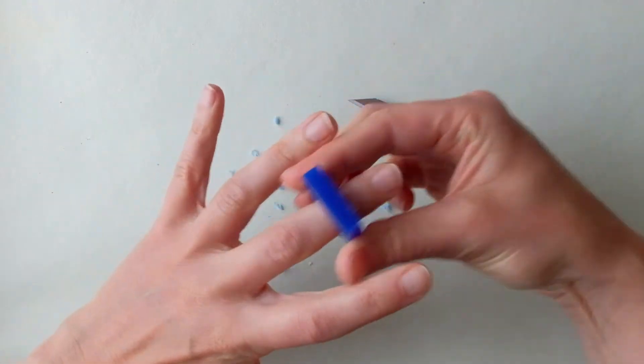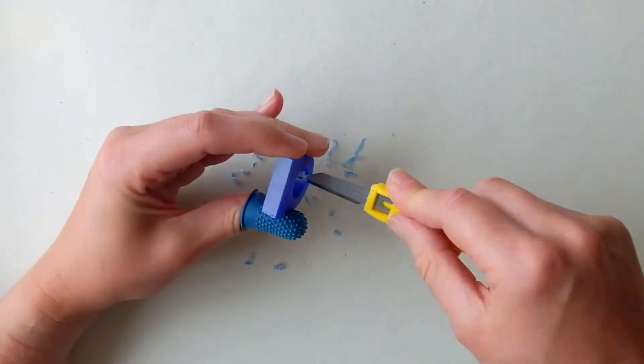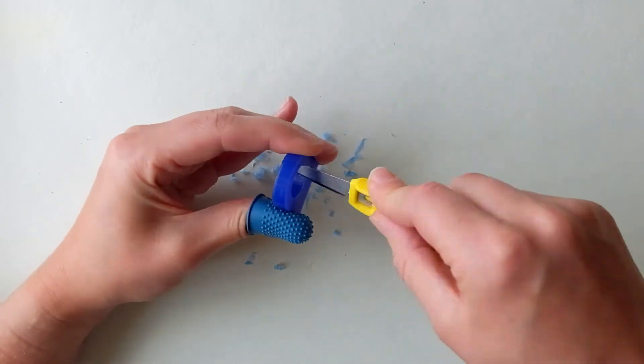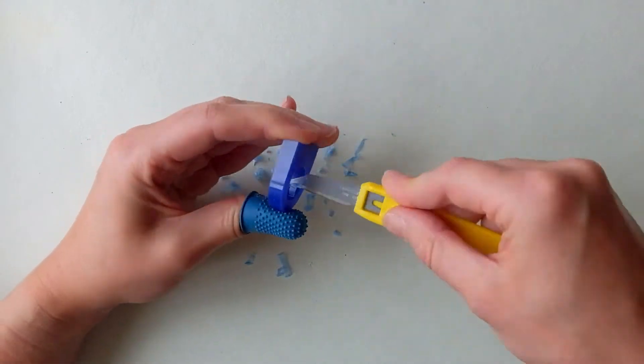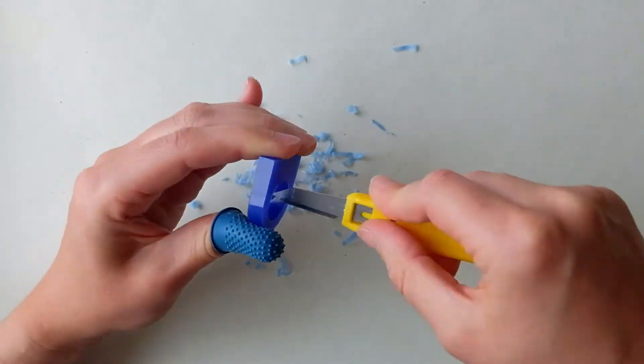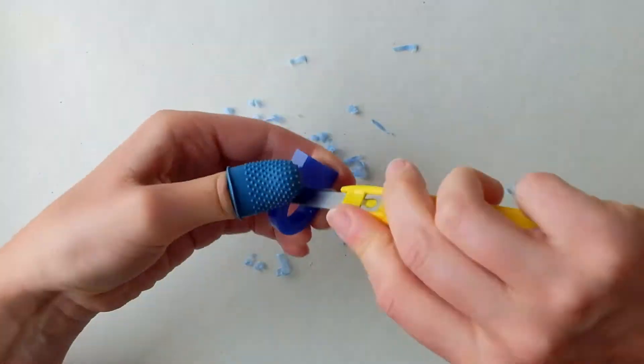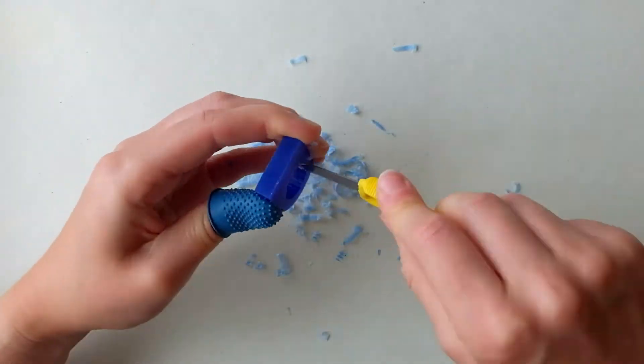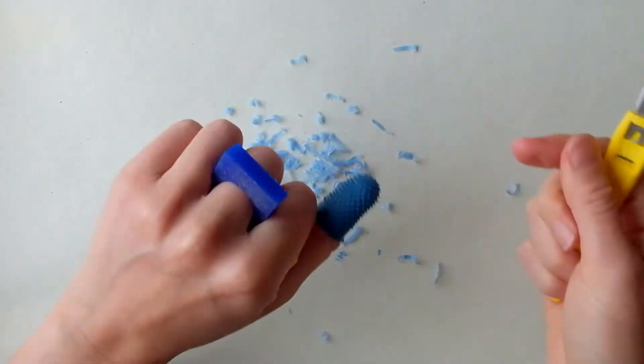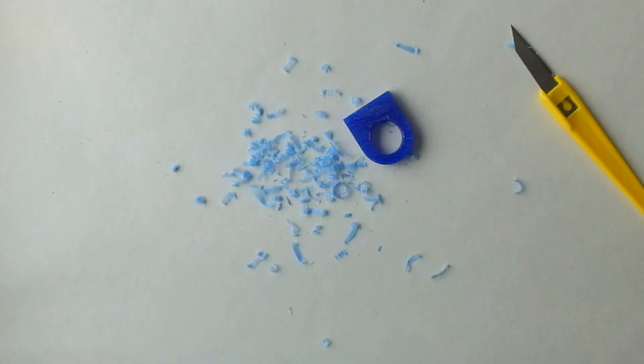So it's a good idea to keep trying the ring on just to make sure it's not getting too big too quick. That fits really nicely. I'm happy with that. So now we can move on to the next part.